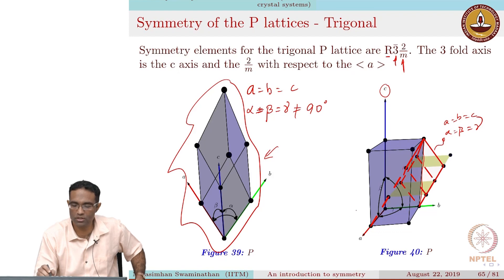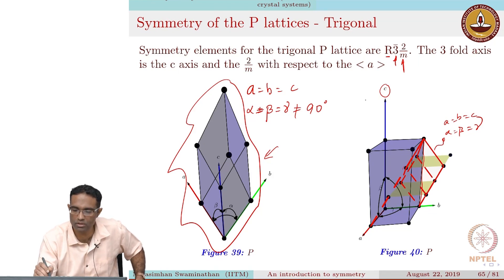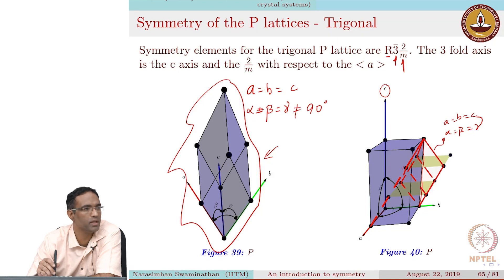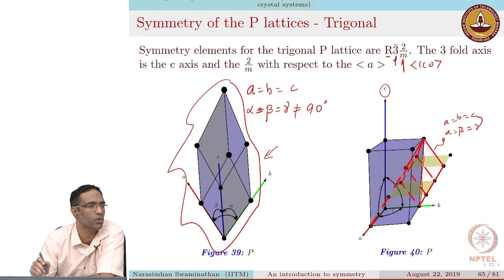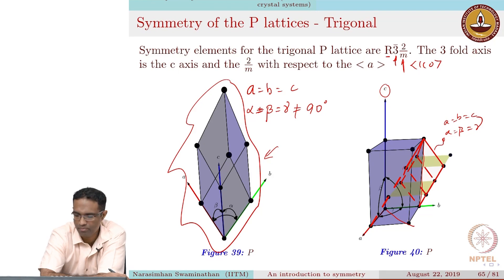Since this is a little difficult to visualize and construct, we generally use a hexagonal unit cell in order to construct trigonal lattices — that is very important to remember. The 3-bar is with respect to the C axis, so there is a 120-degree rotation plus an inversion available about the C axis, and the 2 over M is about the 110 axis of the hexagon, where there is a 2-fold rotation and a mirror plane perpendicular to it, just like hexagonal lattice structures.